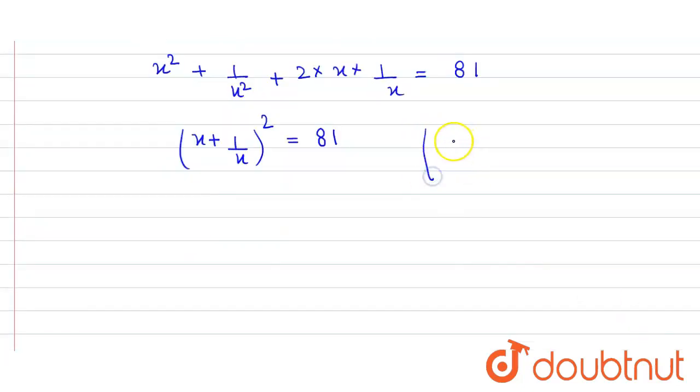Here we have used the identity a² + b² + 2ab = (a + b)².